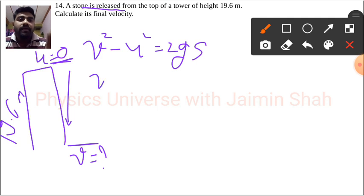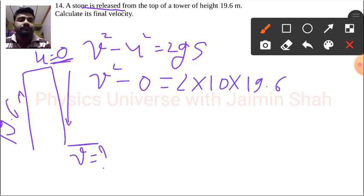v square minus 0 is equal to 2 into 10 into 19.6. So here 20 into 19.6, so 196 into 2, so 12 here 2, then 19.